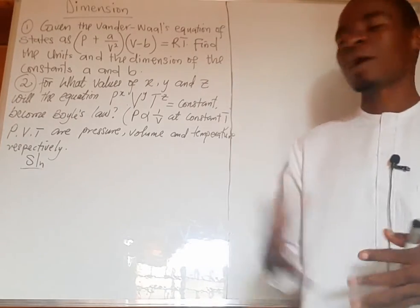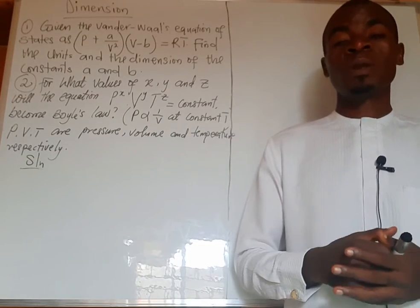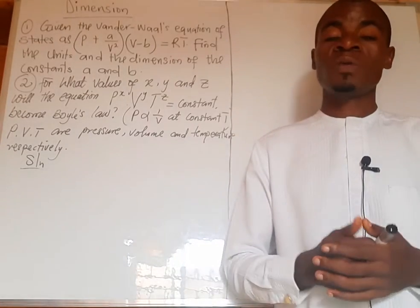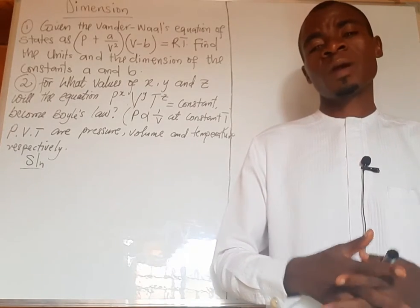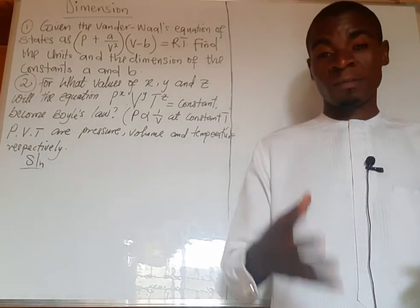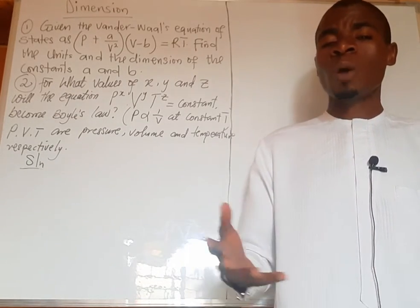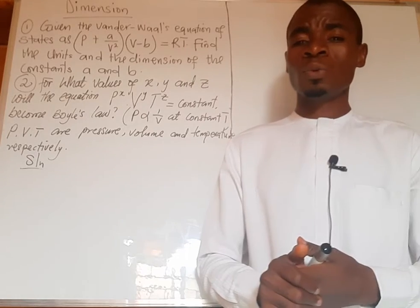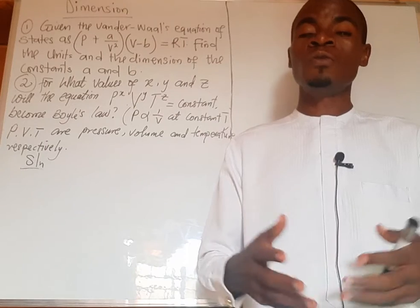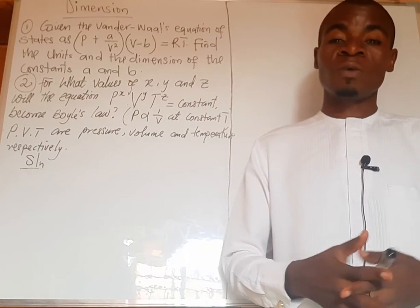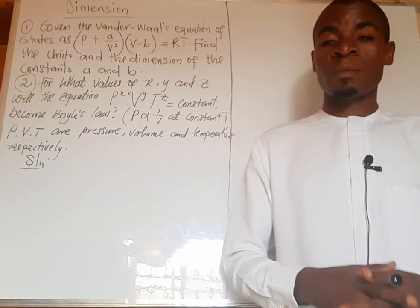Hi, welcome to my channel. Today we have another question here on the board. We are asked to calculate the unit and dimension of the constant in the van der Waals equation, and in the second question we are asked to calculate x, y, and z using dimensions. Please click the subscribe button so you get notified when I upload a new video, and you can also share this video.